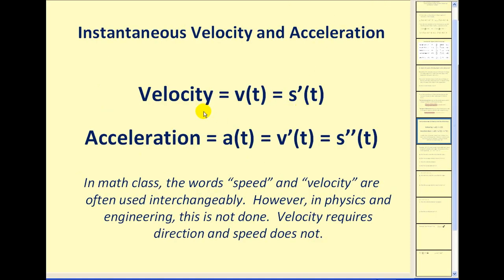To summarize: the velocity function is equal to the first derivative of the position function, and the acceleration function is equal to the first derivative of the velocity function, which is also equal to the second derivative of the position function. In math, the words speed and velocity are often used interchangeably; however, in physics and engineering this is not done because velocity requires direction while speed does not.